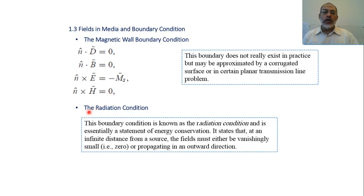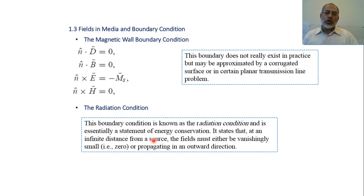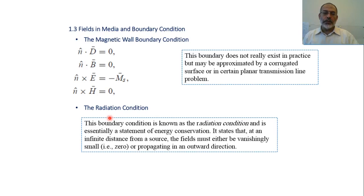Finally, the radiation boundary condition describes what happens to the electric and magnetic fields at infinity. It is essential for energy conservation and states that at an infinite distance from the source, the field must either vanish to zero or propagate outward in an outward direction. These boundary conditions are the basis for solving electromagnetic problems in different cases, such as for microwave components.